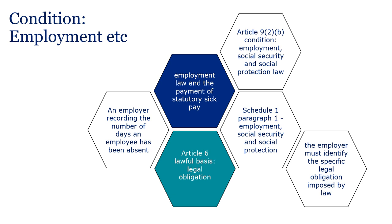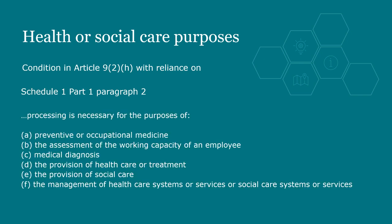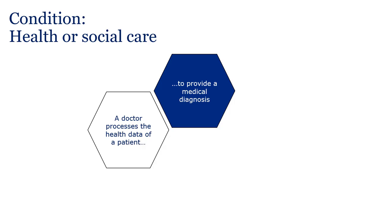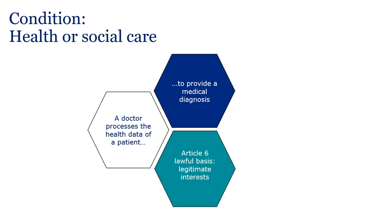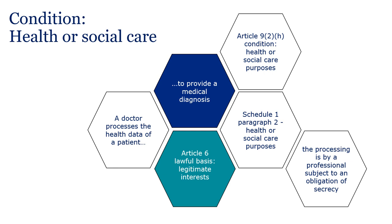Schedule 1 paragraph 2 concerns processing for health or social care purposes. The condition lists the purposes of the processing it is relevant to and also outlines conditions and safeguards regarding obligations of secrecy. For example, a doctor may process the health data of a patient to provide a medical diagnosis. The Article 6 lawful basis for processing might be legitimate interests. The Article 9 condition is health or social care purposes with reliance on Schedule 1 paragraph 2. The doctor has a professional obligation of secrecy.